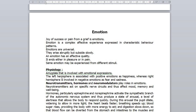The left hemisphere is associated with positive emotions such as happiness, whereas the right hemisphere is involved in negative emotions such as fear and sadness. Damage to the left hemisphere tends to produce excessive anger or depression, and damage to the right hemisphere causes mania and laughing. The brain has a variety of chemical messengers at its disposal — namely neurotransmitters, hormones and neuromodulators — which play a great role in emotions.